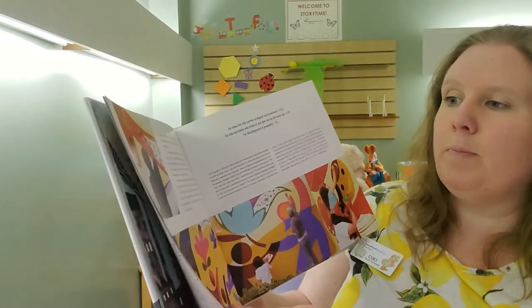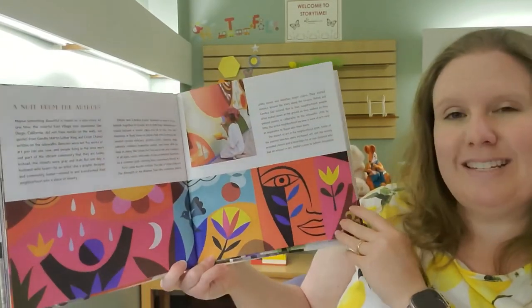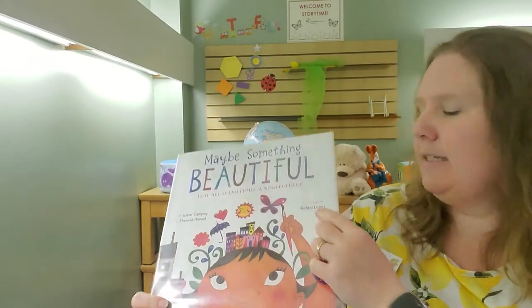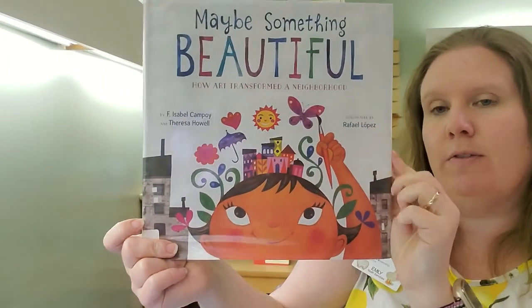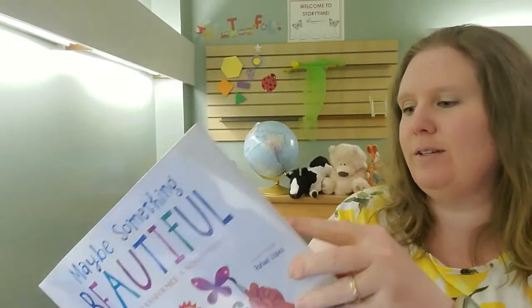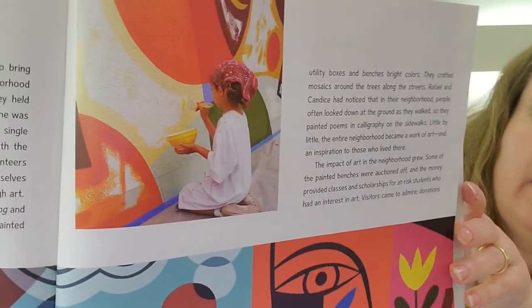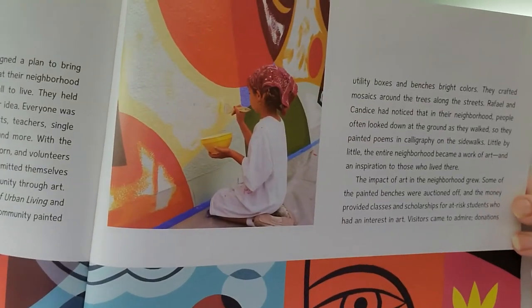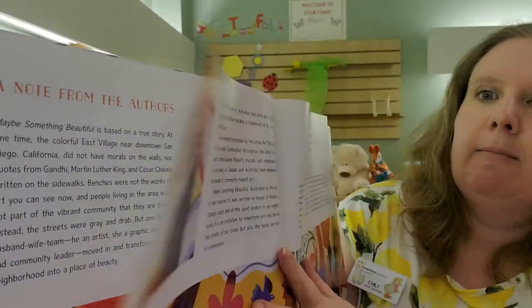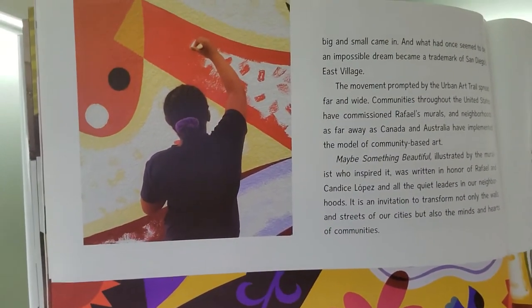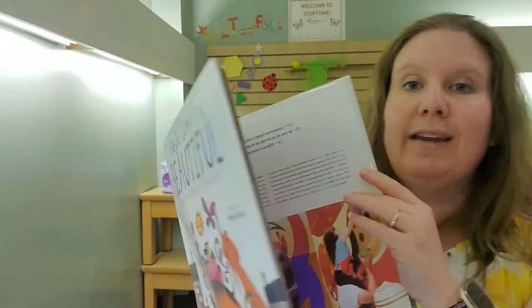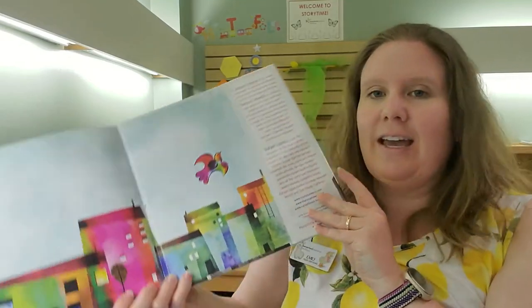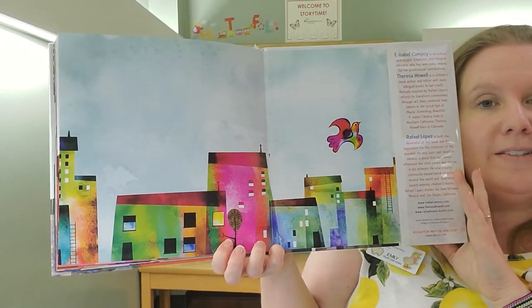The impact of art in the neighborhood grew. Some of the painted benches were auctioned off, and the money provided classes and scholarships for at-risk students who had an interest in art. Visitors came to admire donations, big and small came in, and what had once seemed to be an impossible dream became a trademark of San Diego's East Village. The movement prompted by the Urban Art Trail spread far and wide. Communities throughout the United States have commissioned Rafael's murals, and neighborhoods as far away as Canada and Australia have implemented the model of community-based art. Maybe something beautiful, illustrated by the muralist who inspired it, was written in honor of Rafael and Candice Lopez, and all the quiet leaders in our neighborhoods. It is an invitation to transform not only the walls and streets of our cities, but also the minds and hearts of communities. So, did you guys catch that? The muralist who started painting the walls in San Diego, Rafael Lopez, is the same Rafael Lopez who drew all of the pictures for this book. That is really, really cool. And I also think it's really neat, let me quick clip back, that they have some pictures of some of the actual people painting the walls in San Diego. So, here's a little girl who was painting, and then here's a woman, I believe that was a woman, who was painting a big mural as well. What an amazing, amazing story. And I love that story so much, so I thought we would do a fun craft today where we make our own colorful city. And I'm going to show you how to do that. We're going to make a really colorful city like we see here. So, let's go ahead and get started.